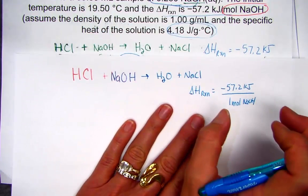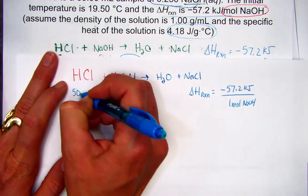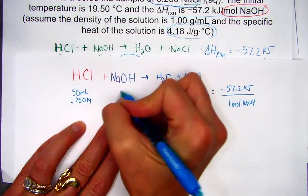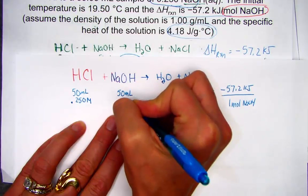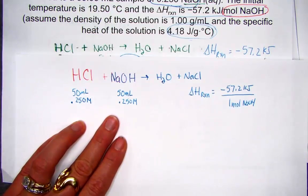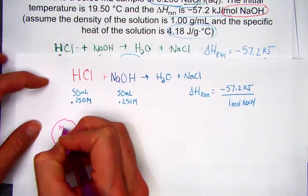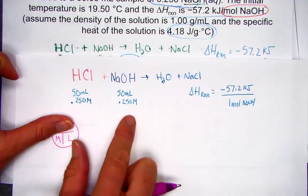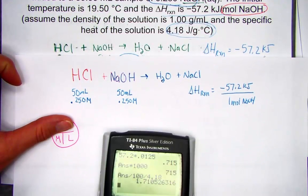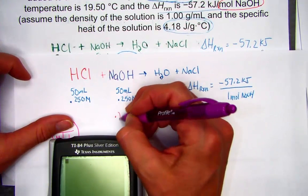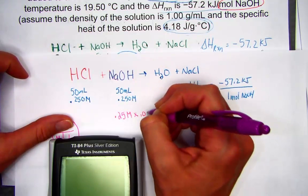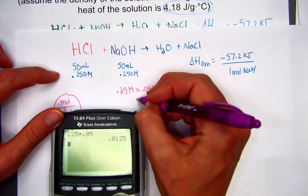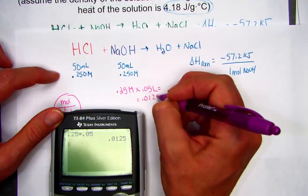We have 50 mL of HCl at 0.250 molar and 50 mL of NaOH at 0.25 molar. Using molarity times liters to find moles: 0.25 molar × 0.05 liters = 0.0125 moles of NaOH. Since both concentrations are the same, there is no limiting or excess reagent.